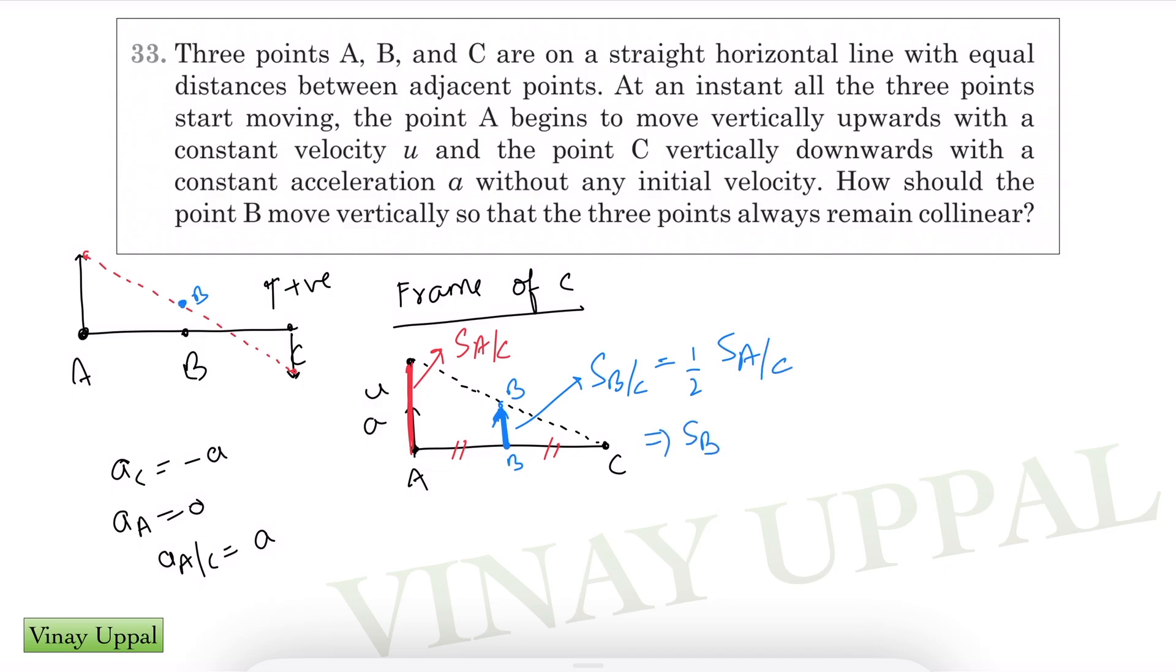So displacement of B with respect to C, in the ground frame displacement of B minus displacement of C. Displacement of C is in the downward direction, so minus half a t squared is the displacement of C. This should be equal to half times displacement of A with respect to C. Now A has an initial velocity of u and an acceleration of a with respect to C, so that will be ut plus half a t squared. Solving this equation I'll get s_b, displacement of B in the ground frame, as u by 2 t minus half a by 2 t squared.